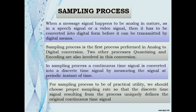Sampling Process: When a message signal happens to be analog in nature, as in a speech signal or video signal, it has to be converted into digital form before it can be transmitted by digital means. The sampling process is the first process performed in analog-to-digital conversion, followed by quantizing and encoding. In the sampling process, a continuous time signal is converted into a discrete time signal by measuring the signal at periodic instants of time.